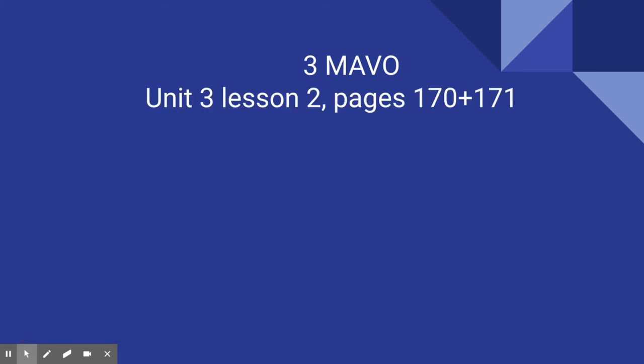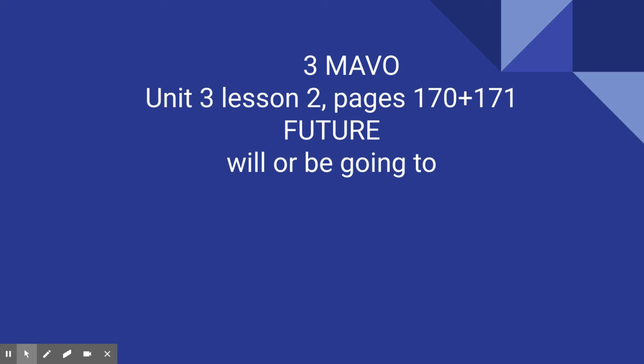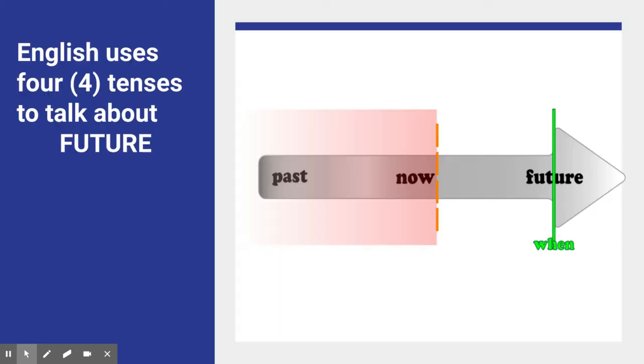Hello, here we are again with a new video for 3MAVO. Grab your books, open up on pages 170 and 171, because this is a new item for Unit 3 Lesson 2, and it's about the future. It's the future with 'will' or 'be going to', and I'm going to explain that. So grab your books, here we go.